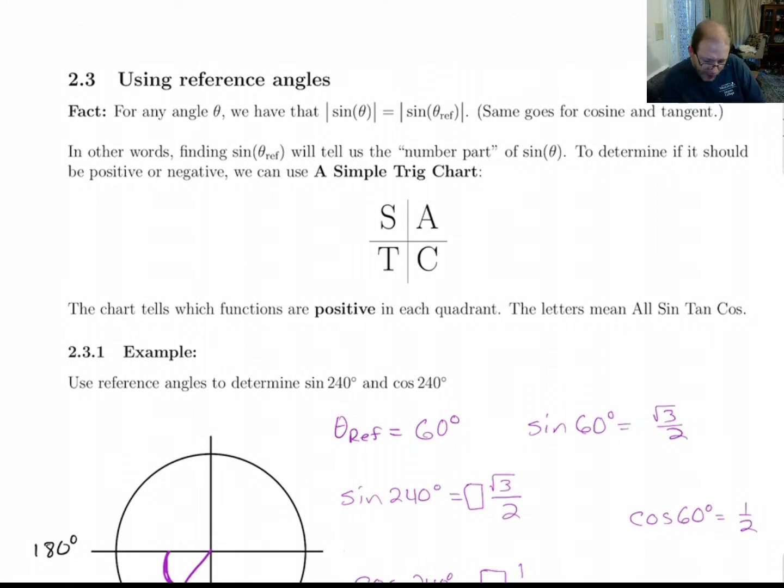Use this thing. This is a simple trig chart. And you go starting with the first quadrant and you go around counterclockwise. The simple trig chart tells you which one of the three functions, sine, cosine, and tangent, are positive in these quadrants.